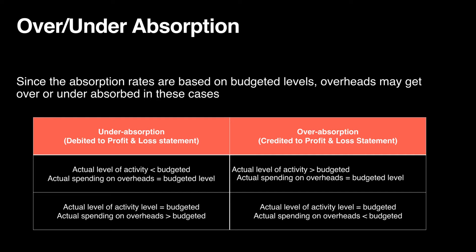Overheads must be recovered. The firm calculates an overhead absorption rate — how much overhead to charge for every unit produced — and recovers a portion of overheads from the customer with each sale. Under absorption can occur when the firm produces fewer units than predicted. If actual activity is less than budgeted activity, the firm made fewer units, resulting in fewer machine hours or labor hours, and therefore it cannot recover the full estimated overhead amount — which is a loss.